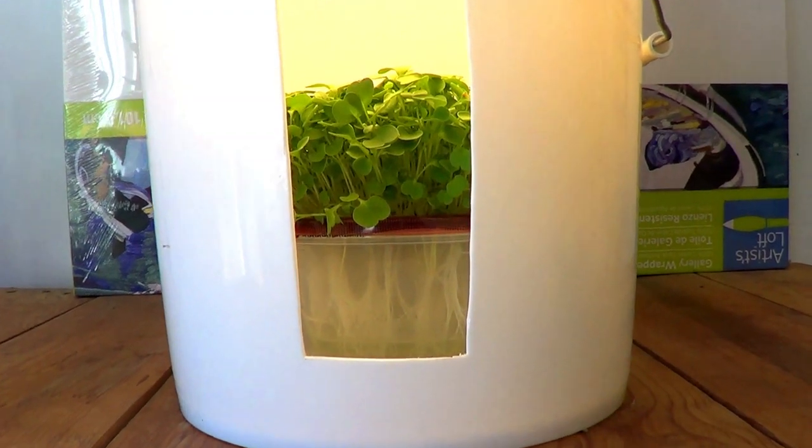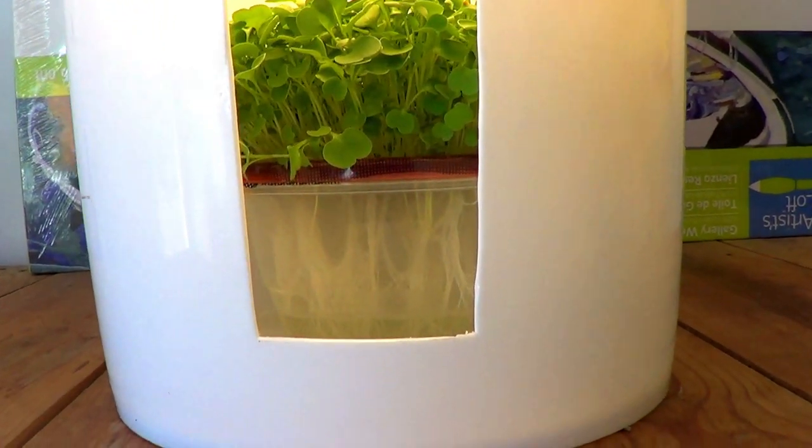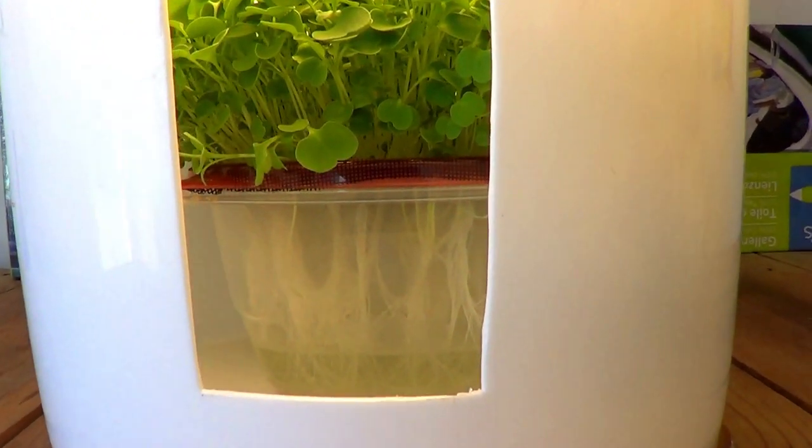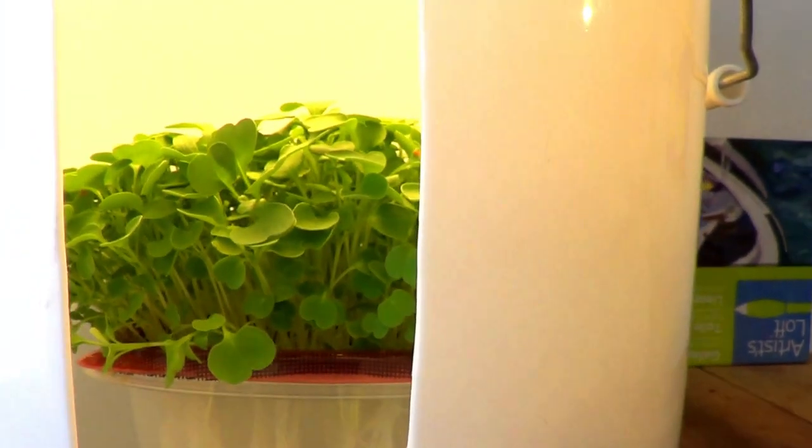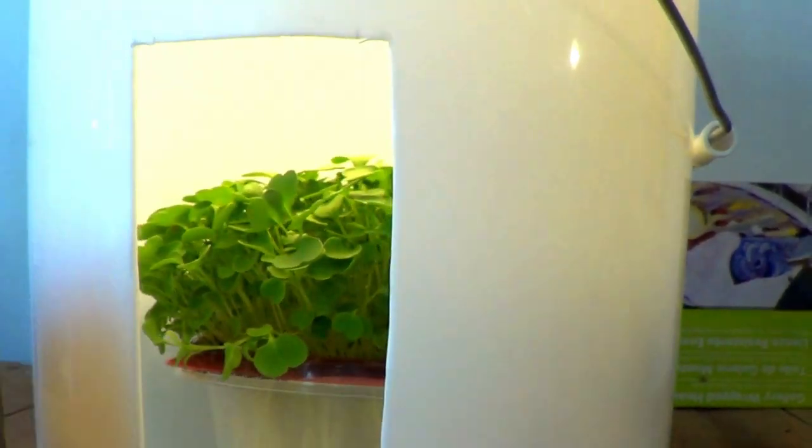So these are arugula I have growing in there now. They weren't really growing in there - I grew them somewhere else and I just put them in here for you guys - but they would grow just beautifully in there because, as you can see, it's well lit in there. You could put a little block like this inside if you wanted to bring them closer to the light.